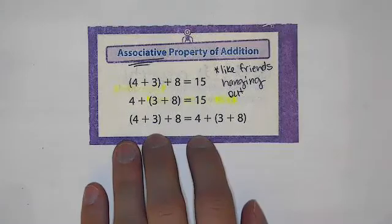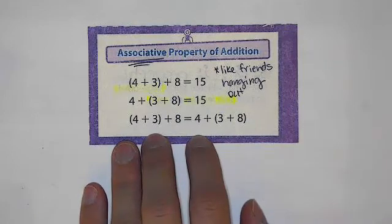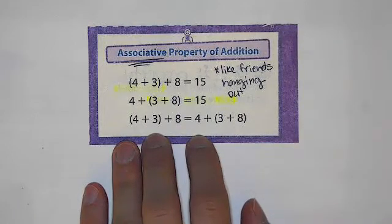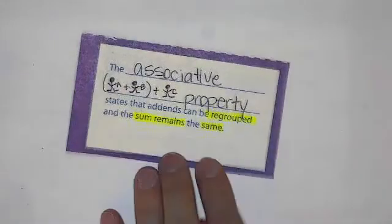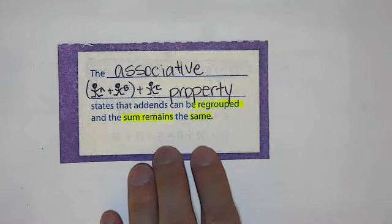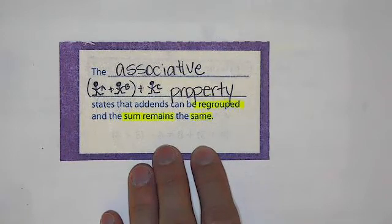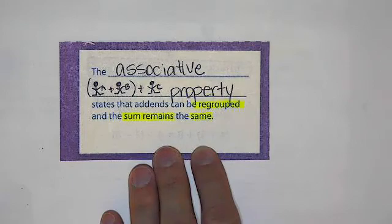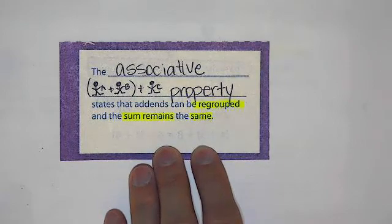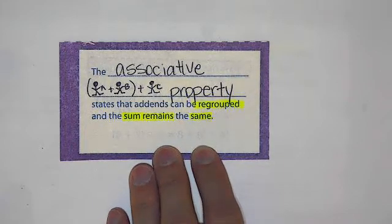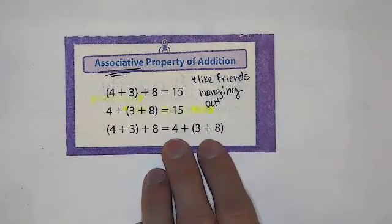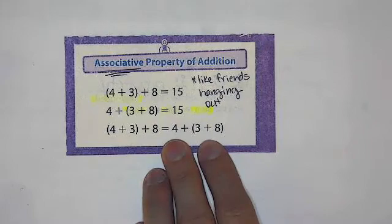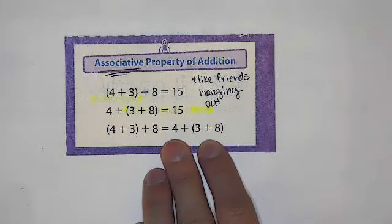The next property we'll look at is the associative property of addition. And I like to think of that as like friends that are hanging out. The associative property states that addends can be regrouped and the sums remain the same. So you can see my little friends, friend A, friend B, and friend C. It's like when the friends hang together. You can see when the parentheses are grouped around different numbers at different times. The answers will still remain the same.